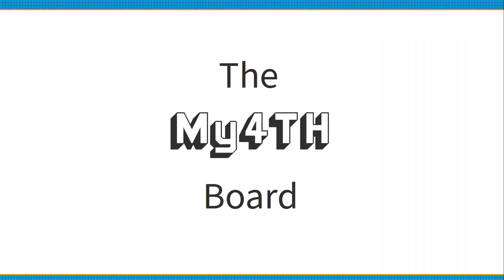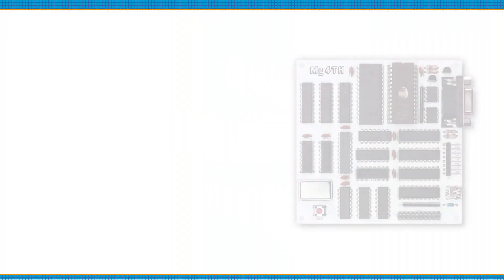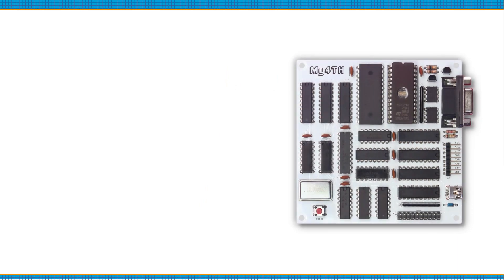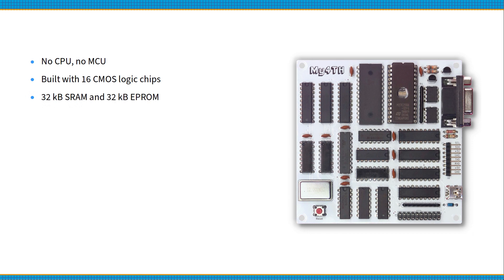Now I would like to tell you a little bit more about the MyForthComputer board. The computer does not have a CPU or microcontroller. It uses only 16 CMOS logic chips from the 74 high-speed CMOS series. It has 32 KB SRAM and 32 KB EEPROM memory. There are two optional EEPROMs that can be used to store Forth blocks.